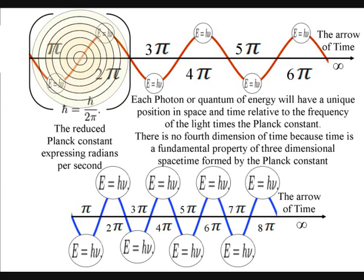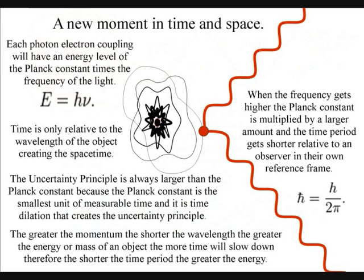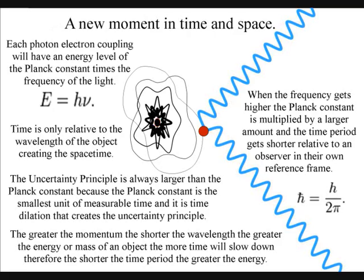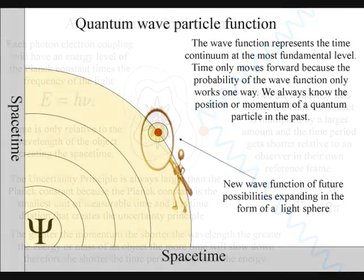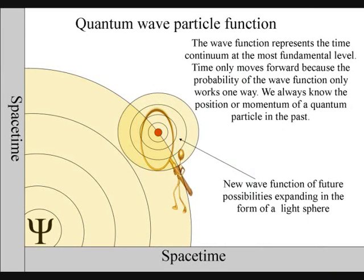In this theory, at the quantum level of the atoms, the moment of now is created by a single photon-electron coupling, creating a wave-function of future possibilities. It is because the observer can choose when and where to collapse a wave-function, that we have free will.